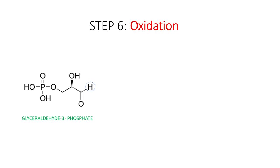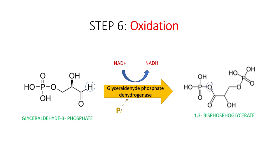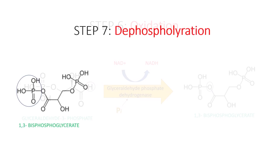In the sixth step, the enzyme glyceraldehyde-3-phosphate dehydrogenase catalyzes a reaction that is the sum of two reactions: first oxidation, then phosphorylation. As the oxidant we use NAD+, which becomes NADH, and for phosphorylation we use free inorganic phosphate. The energy for phosphorylation comes from the previous oxidation, and the final product is 1,3-bisphosphoglycerate.